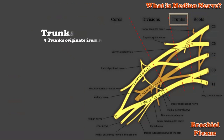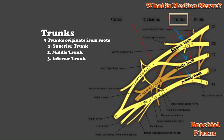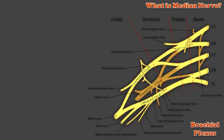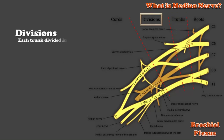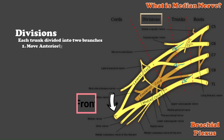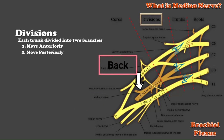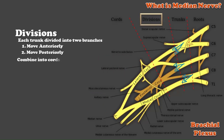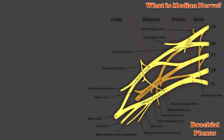C5 and C6 combine together to make the superior trunk, C7 makes the middle trunk, then C8 and T1 combine together to make the inferior trunk. After that, these trunks are further divided into two parts which are called divisions. One part of these divisions is divided towards the front of the shoulder and the other part towards the back of the shoulder. After dividing, they enter the axilla where they unite again to form cords.